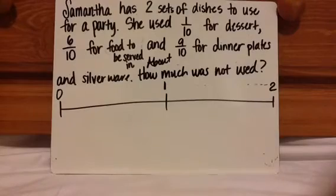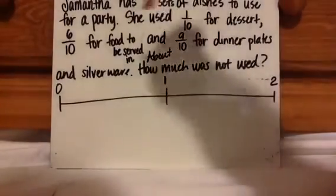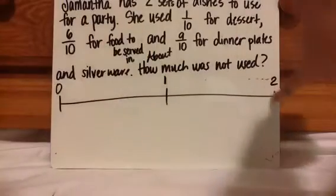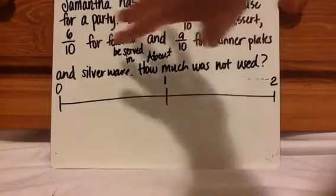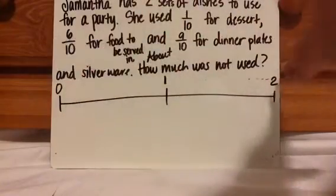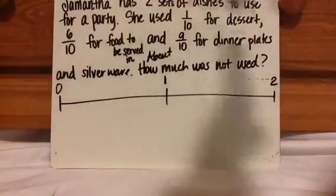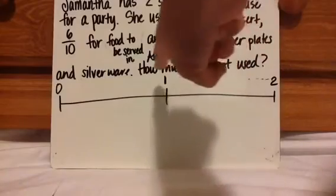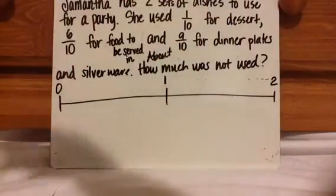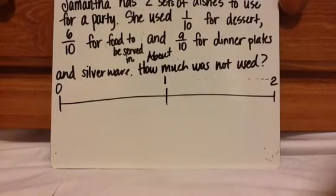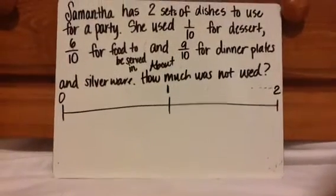One part you need to notice is that she has two sets. So it's like she has two whole sets. I want you to be aware that you're starting with two whole. And it says how much was not used, so you will be subtracting, you will be going backwards. Press pause and see if you can figure it out.